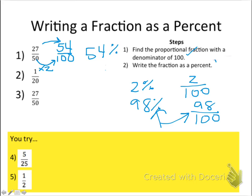Let's do another example, and we're done. Let's do another example together. So, our first step, we have 1/20. Our first step is to find the proportional fraction with a denominator of 100. We need to go from 1/20 to something over 100.